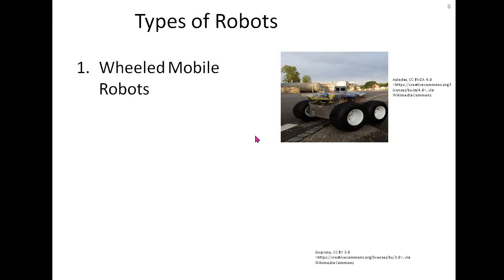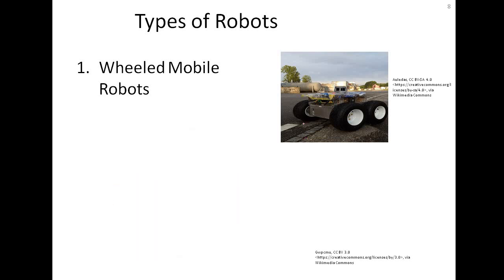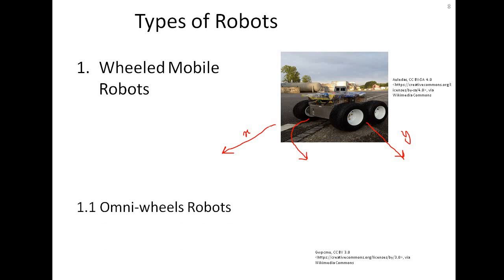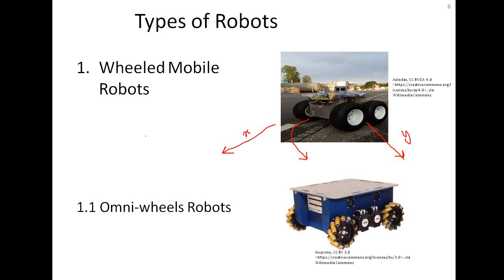A problem with normal-wheeled robots is that they cannot change their direction instantaneously. For example, if the robot is moving in the x direction and you want it to instantly move in the y direction, it needs time to turn first. This problem can be solved by using omni wheels — a special type of wheel that allows instantaneous direction changes.